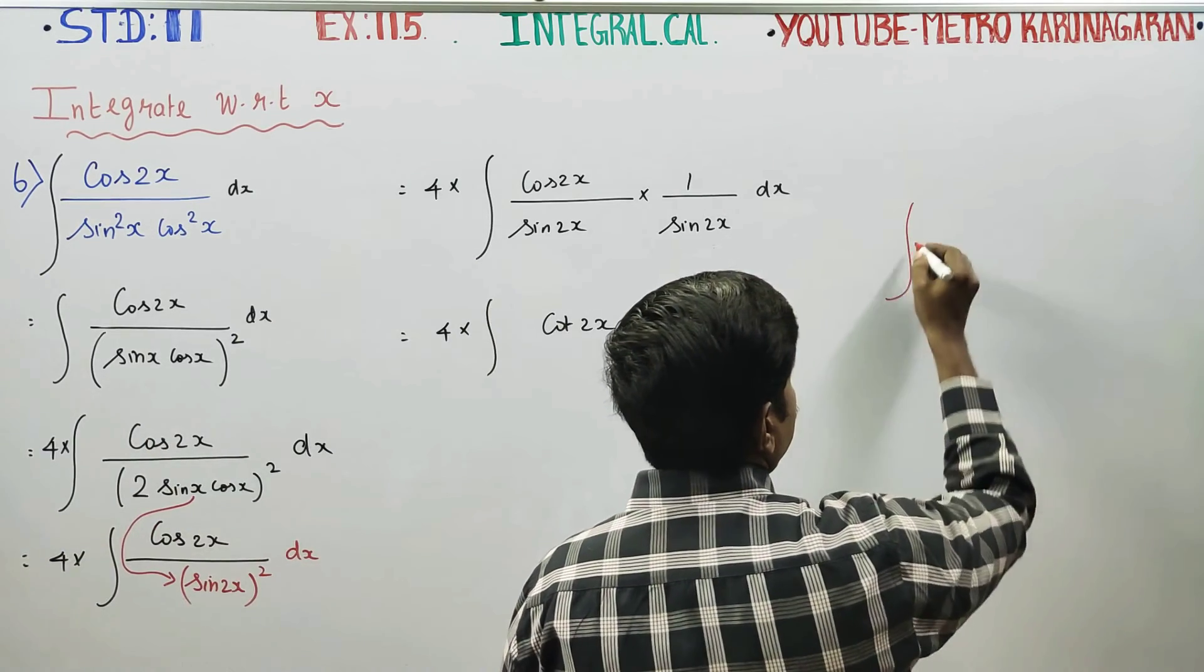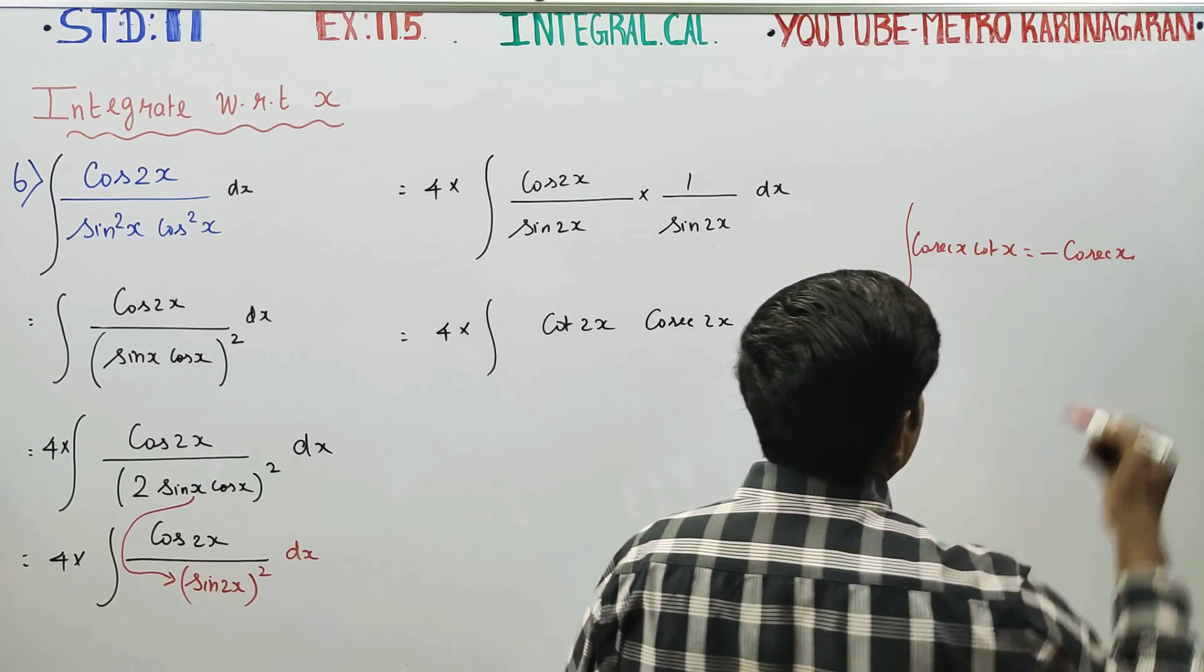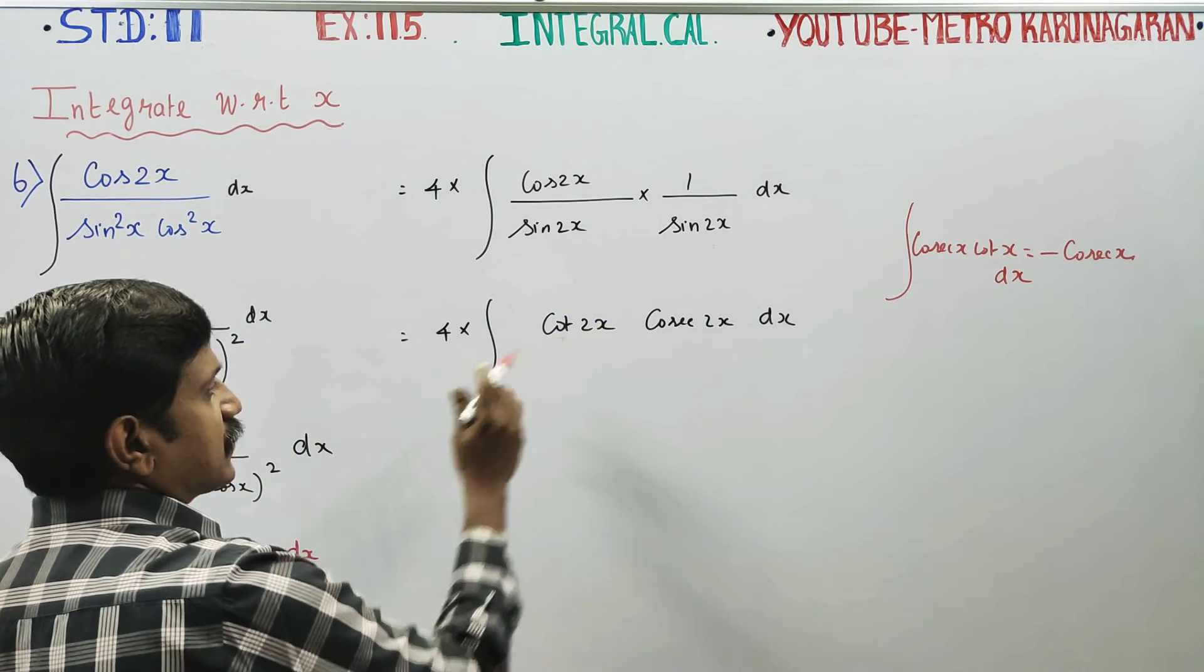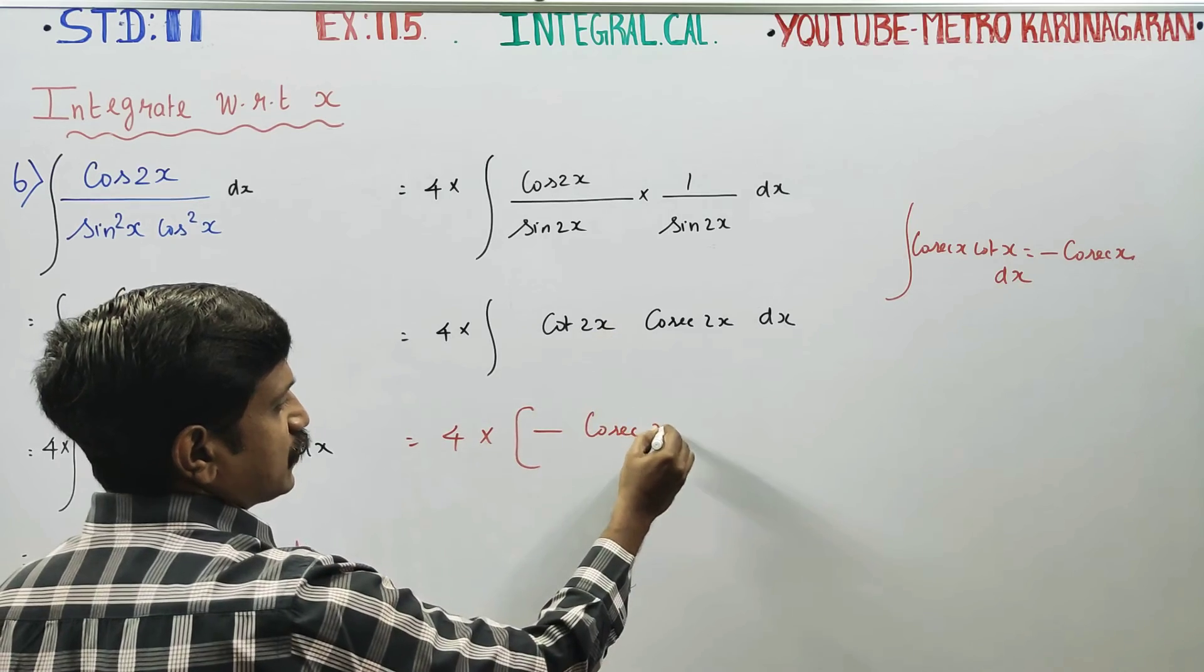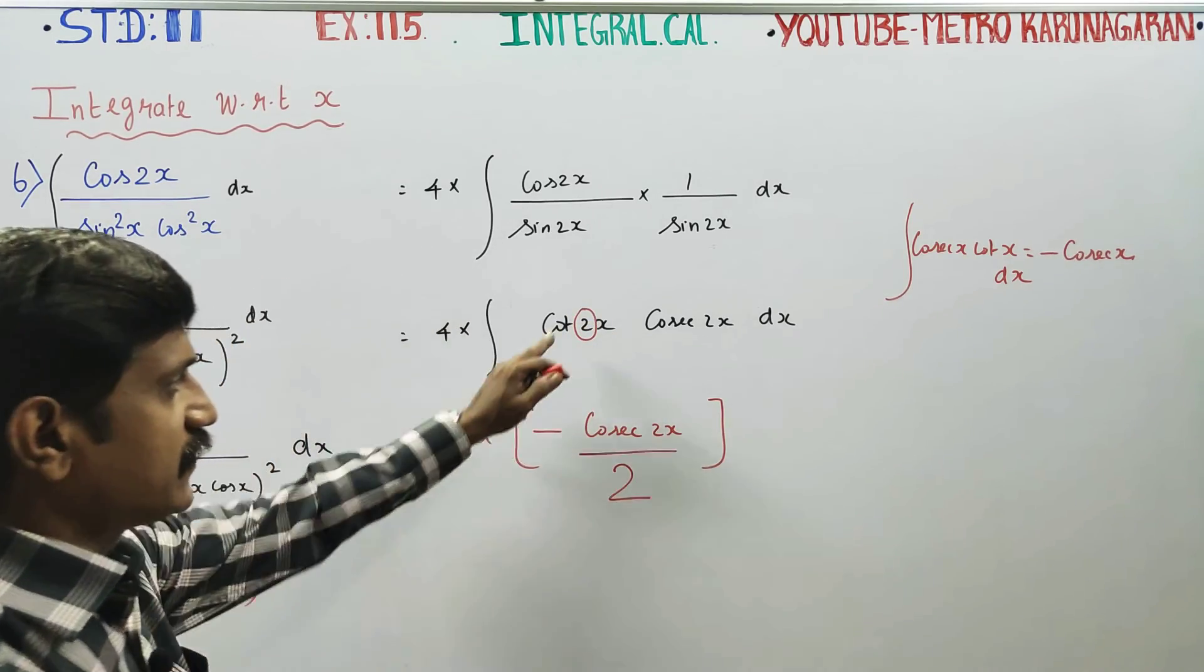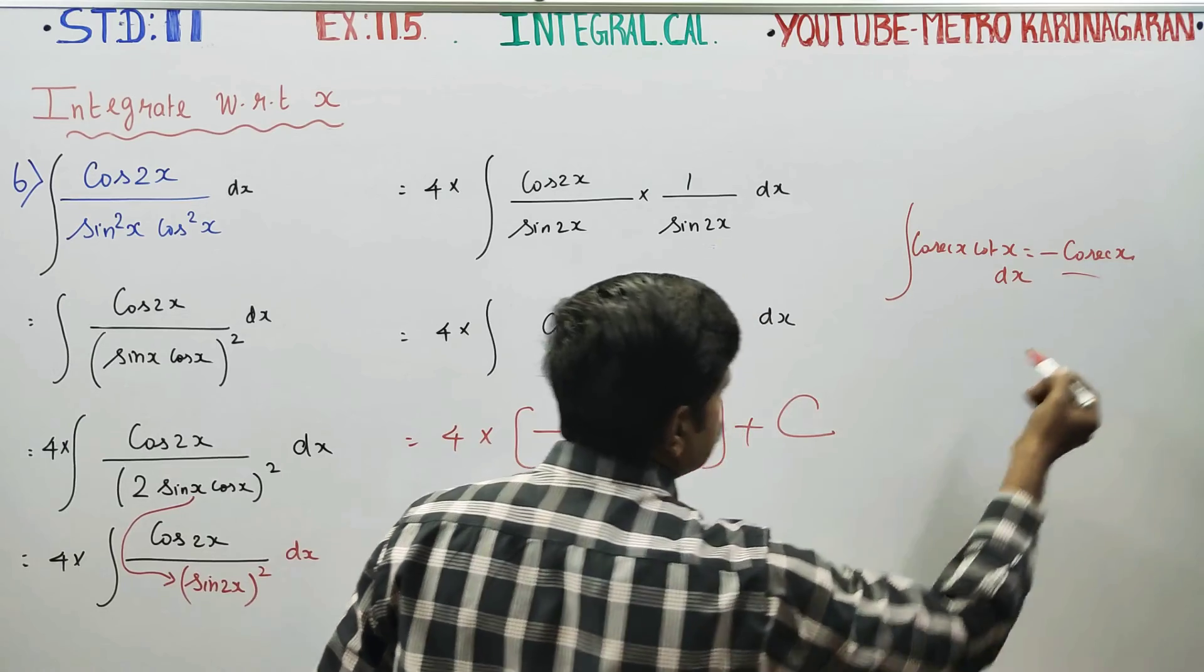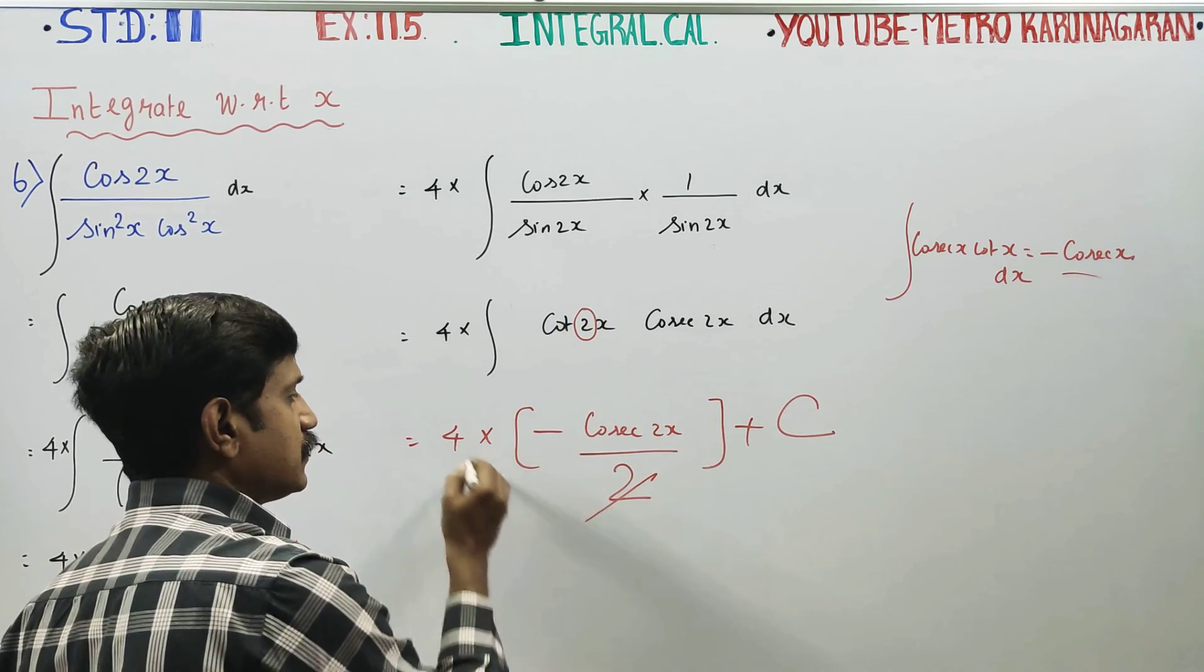Integration of cosecant x cot x is minus cosecant x. This is the formula. For cosecant 2x, there is x in the denominator, so the derivative gives us 2. 2 and 4 cancel.